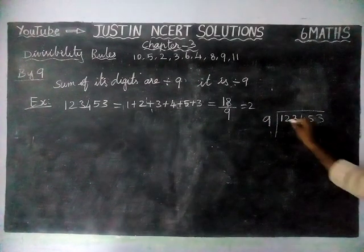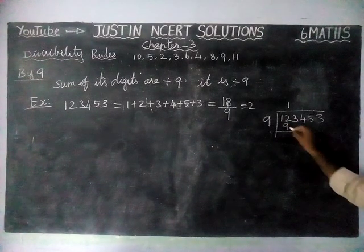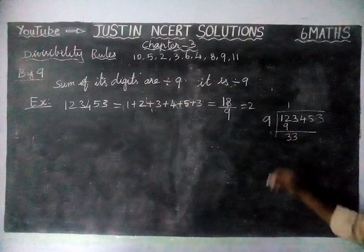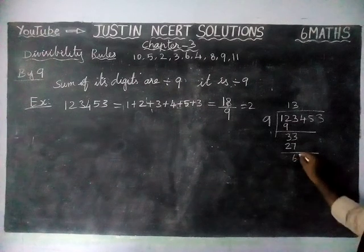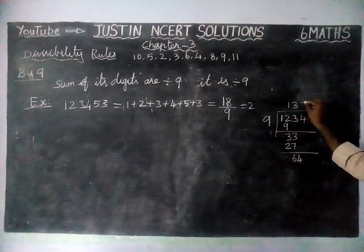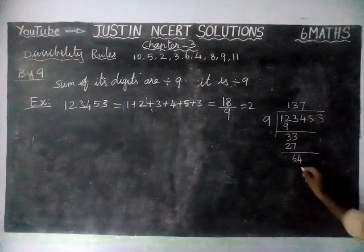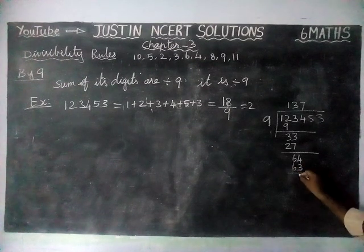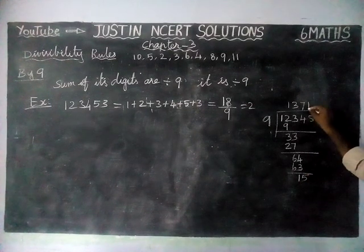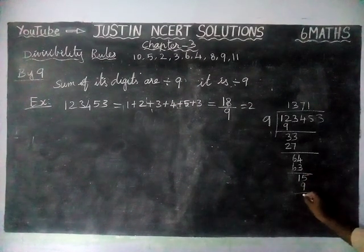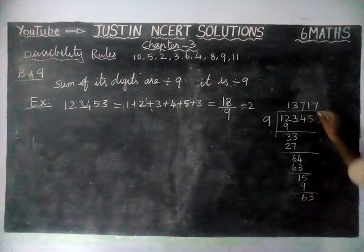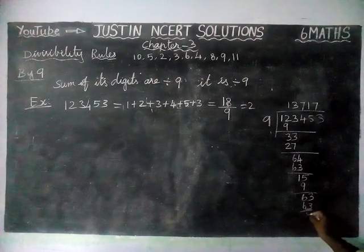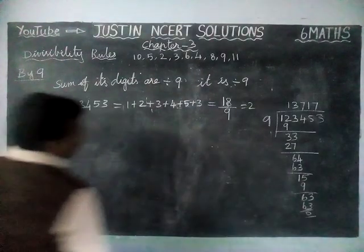How many 9s in 12? Only 1. Remaining 3. Now we have taken 33. In 33, we have three 9s are 27, remaining 6. Bring down to get 60 and 4. Seven 9s are 63, remaining 1. Now we are taking 15. In 15, we have only one 9, remaining 6. We have taken this 3 to get 63. In 63, seven 9s are 63 and remainder 0. So that number is exactly divisible by 9.